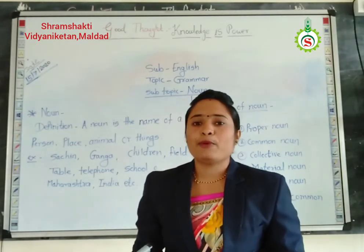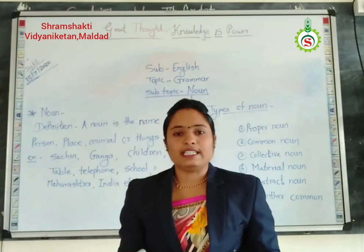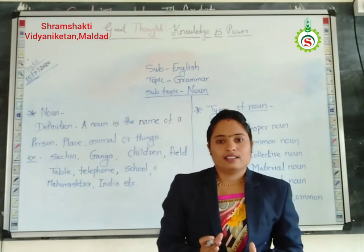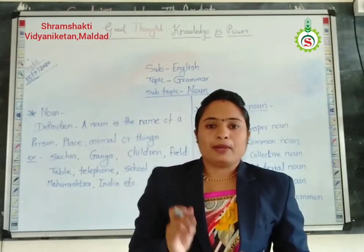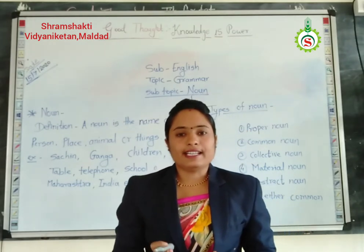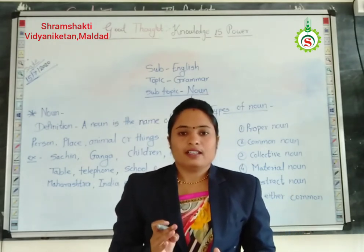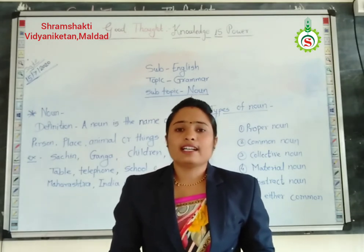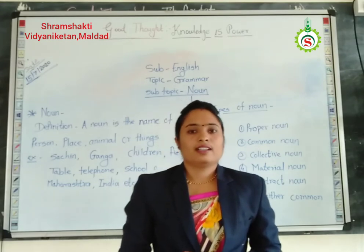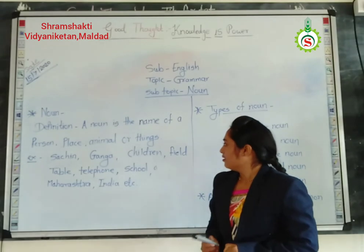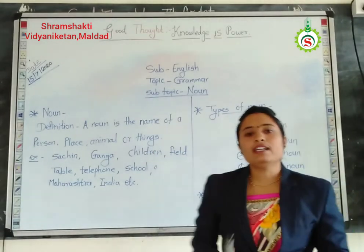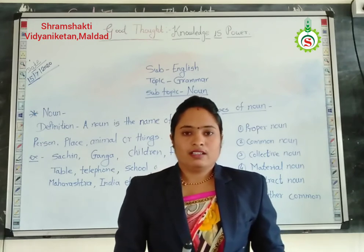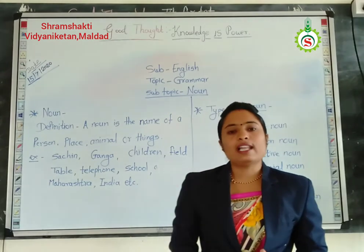For example, Sachi — that is the name of a boy. Shruti, Priti, Gita — these are names of girls. Then Maharashtra, India, Madhya Pradesh, China, Japan — these are names of countries. And table, chair, spoon — these are names of things. All are nouns.